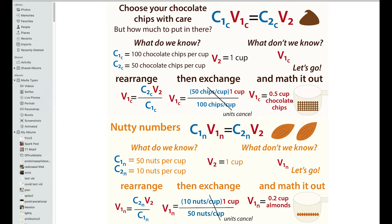So that's how many chocolate chips we need to add. Now let's do the nuts. We know the initial concentration of nuts is 50 almonds per cup and we want to get to 10, with the same final volume of one cup of cookie dough. We do the exact same thing using the nut concentration, and we find that we need 0.2 cups of almonds.